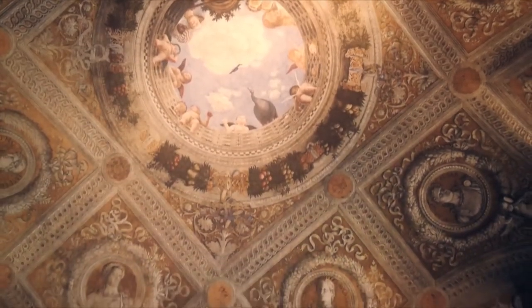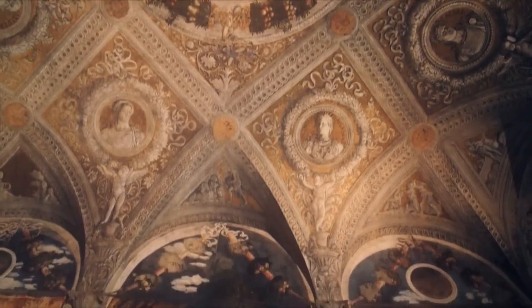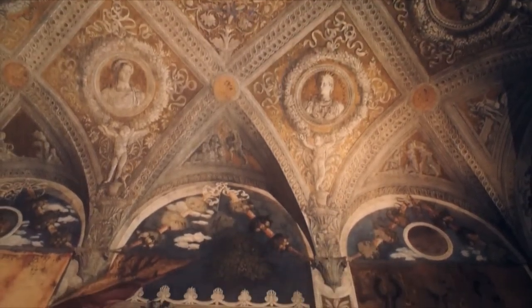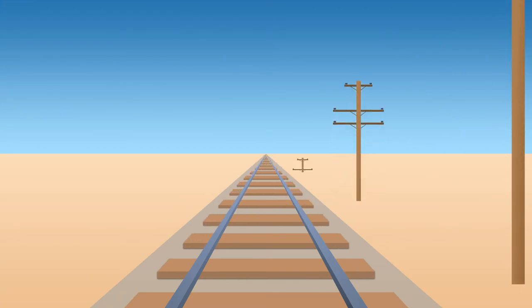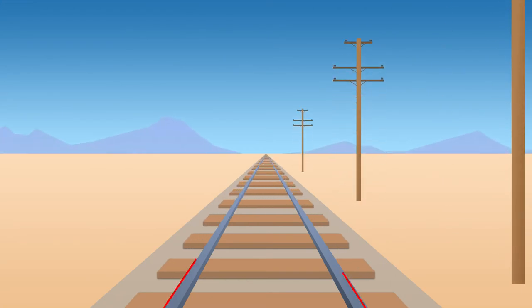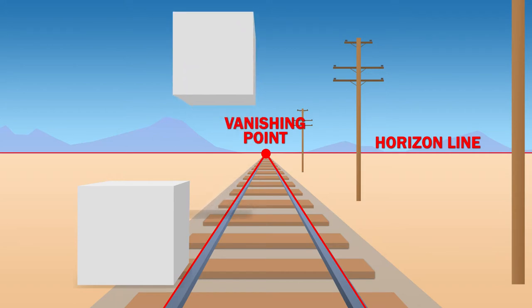Linear perspective is a type of perspective that allows the viewer to visualize depths and see objects realistically in space. Using the image of train tracks, we can better understand this. Orthogonal or parallel lines meet at a single vanishing point, which sits on a horizon line — where our eye level is. We can see the tops of objects when they are below the horizon line, and objects above the horizon line we are looking up at.